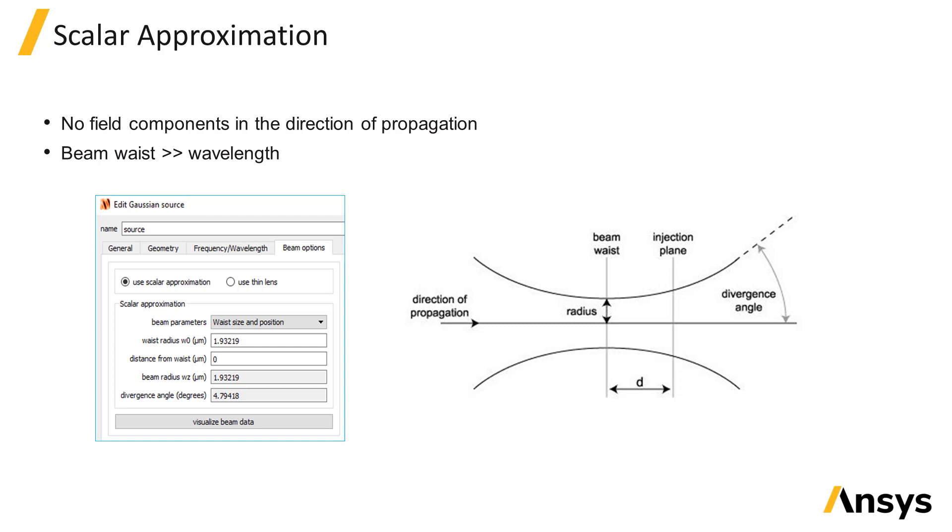So all fields are polarized in the transverse plane normal to the propagation axis. This approximation is valid as long as the beam waist diameter is much larger than the wavelength of the source.